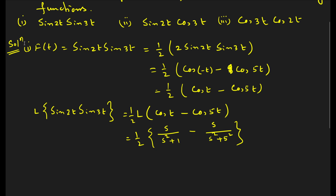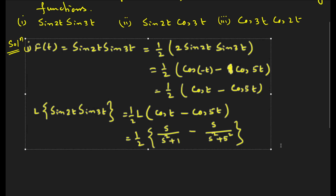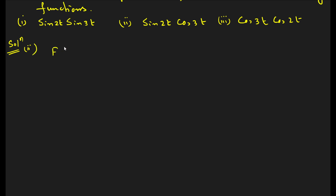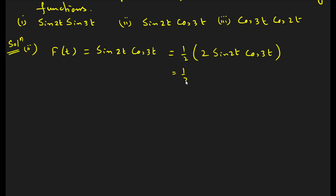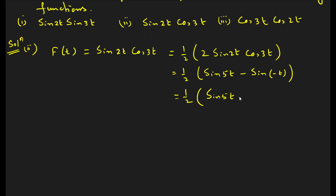Now let us take the second problem. Here f(t) = sin(2t)·cos(3t). Multiply with half and 2 to get the form 2·sin(A)·cos(B). The formula for 2·sin(A)·cos(B) is sin(A+B) + sin(A−B). So A+B = 5t and A−B = 2t−3t = −t. Since sin(−θ) = −sin(θ), we get half times [sin(5t) + sin(t)].